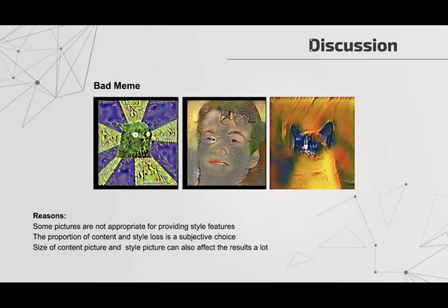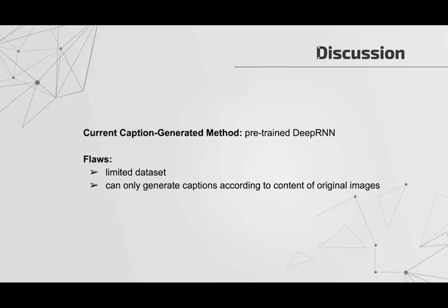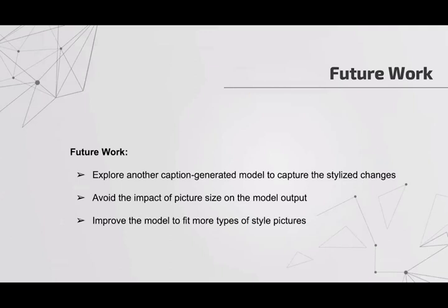The caption-generating method we are using is based on an RNN. Because of the limited dataset, performance is poor — it can only generate captions based on the content of the original images. In the future, we will explore more caption-generating models to find other ways of capturing the meaning of styles and converting it into captions. Furthermore, we will investigate how to avoid the impact of picture size on model output, and improving the models with more types of style pictures is also important and necessary.